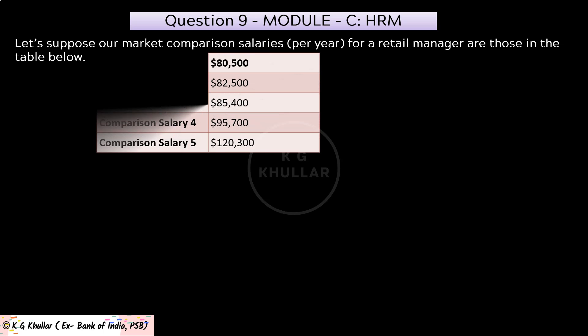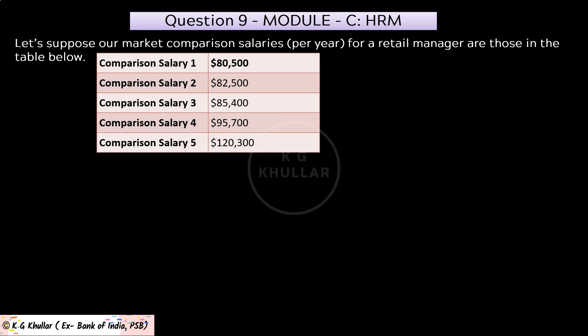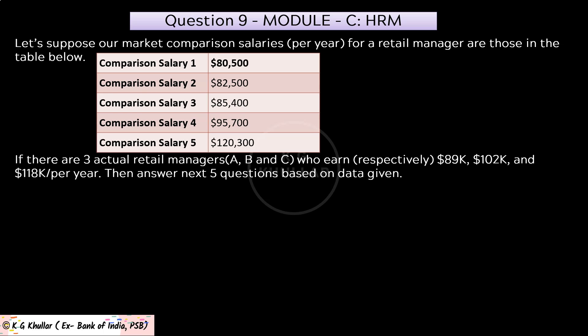Let's suppose our market comparison salaries per year for a retail manager are those as per this table. This market comparison salary chart shows the salaries given by the industry to retail managers per year. There are 3 actual retail managers — A, B, and C — who earn $89,000, $102,000, and $118,000 per year respectively. Answer the next 5 questions based on the data given.